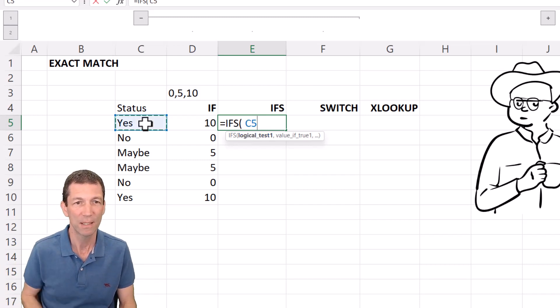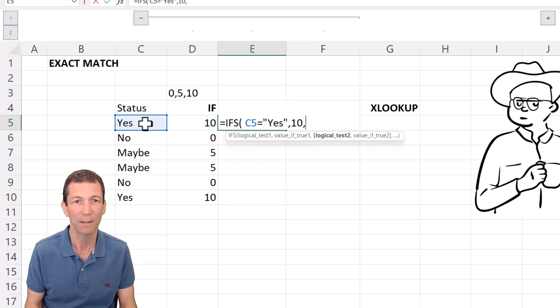So you can say look if c5 equals yes then 10, and you don't have to do if again. And by the way put spaces in your formulas to make these things easier to read, so you can say c5 equals maybe then 5.